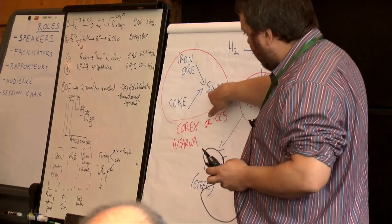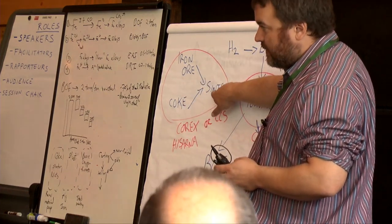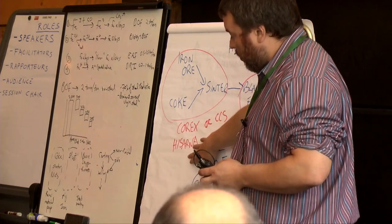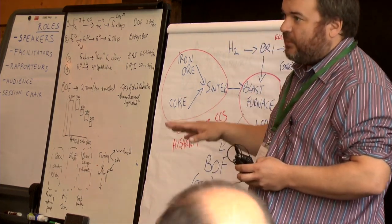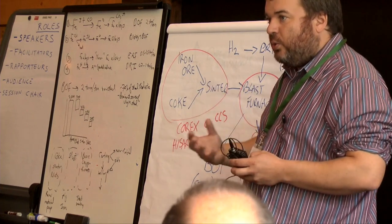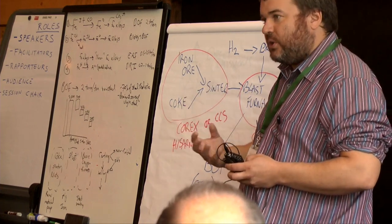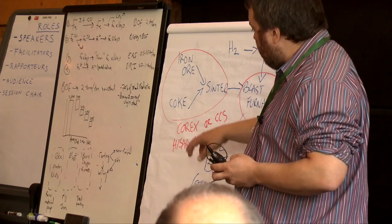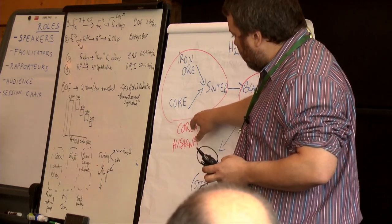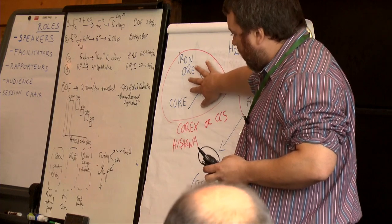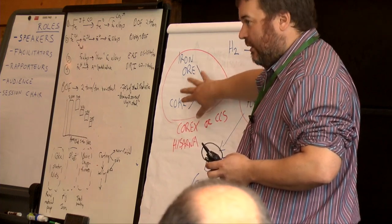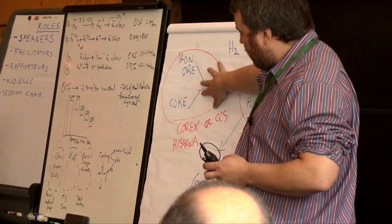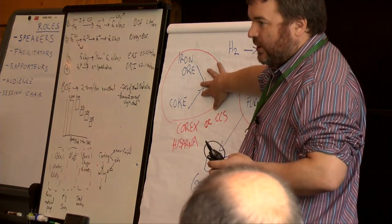The coke and the iron ore sintering process can be got rid of via a Corex plant or a Hisana plant. They're two different types of new iron-making processes which are currently being demonstrated within the EU. Each of them, because they get rid of this part of the process, so they integrate quite well with what's going on. They get rid of about 30% of the emissions.